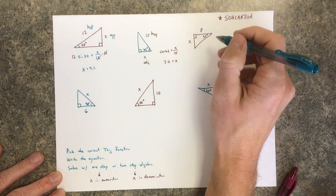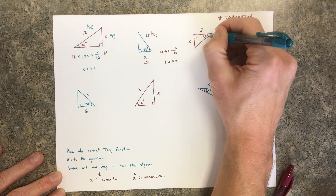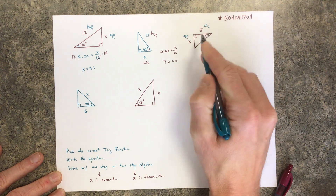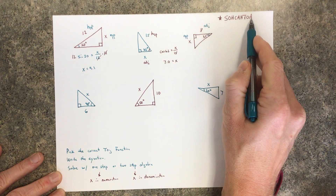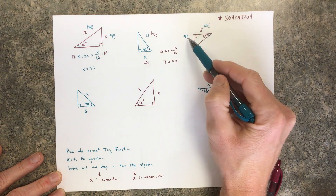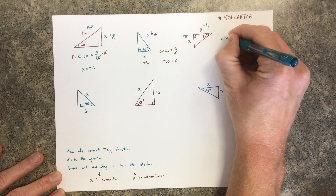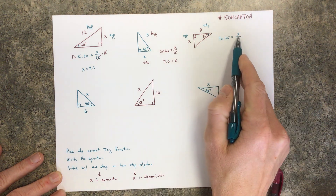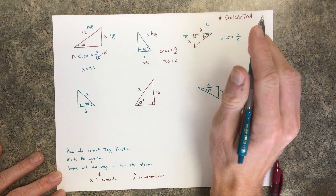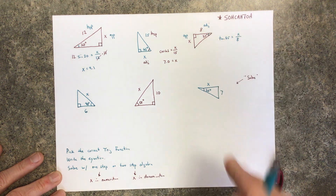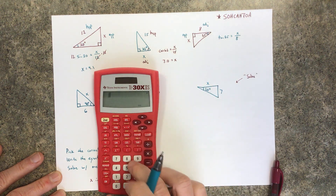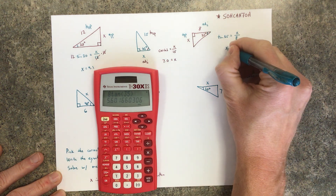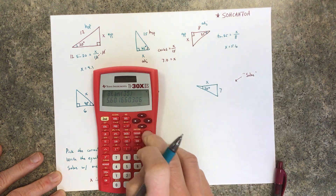Problem three: I don't have the hypotenuse this time. Looking at the angle, this side is adjacent — it's next to the angle — and this is the opposite. Tangent relates opposite and adjacent, the two legs. So: tangent of 35 = x/8. X is in the numerator, so multiply 8 to the other side: x = 8 × tangent(35). That gives 5.6.